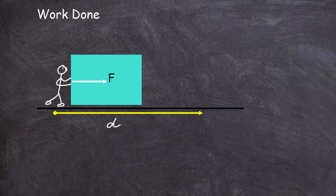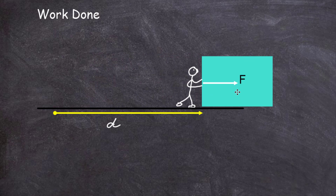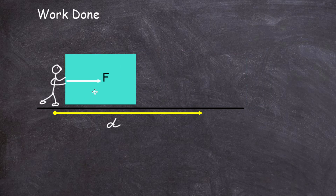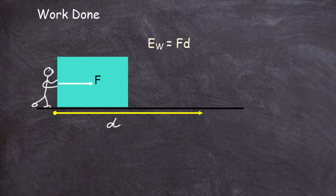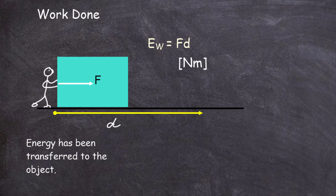Let's recap about work done. When a force is applied to an object and that force moves the object through a distance of d metres, we say work has been done by the force on that object. Energy has been transferred by the force onto that object. The equation to link it all up is EW equals F times d — EW being the work done, F being the force, and d being the distance the object was moved. The units for work done are newton metres, equivalent to joules, the unit for energy.